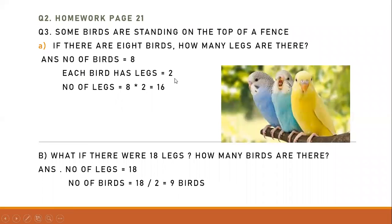To find the number of legs, we multiply eight by two. Eight times two is sixteen. So eight birds have sixteen legs because each bird has two legs.